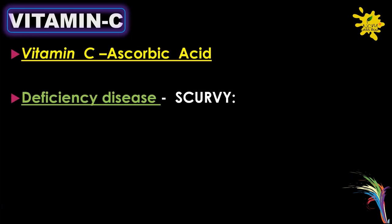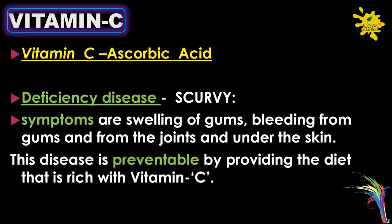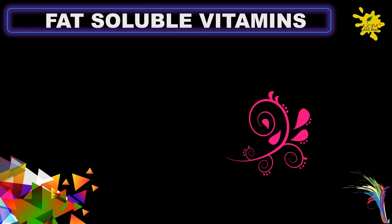Vitamin C deficiency disease is scurvy. Symptoms include swelling of gums, bleeding from gums and from the joints, and under the skin. This disease is preventable by providing a diet rich in Vitamin C.